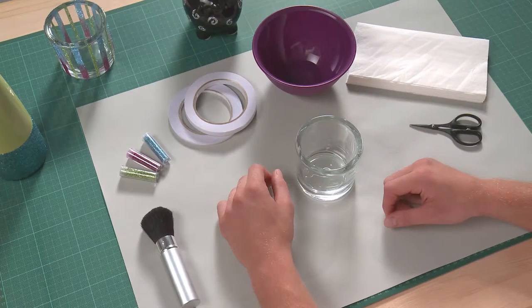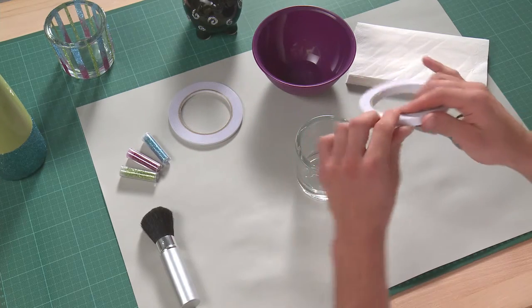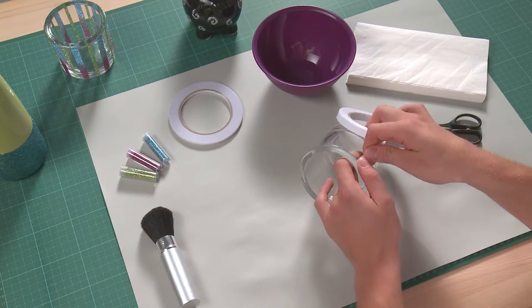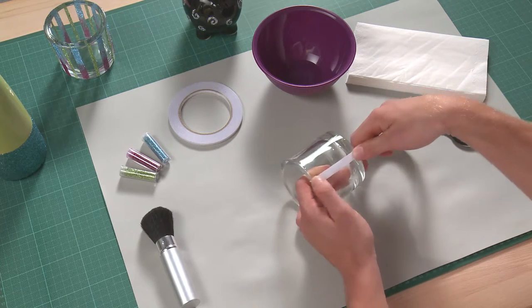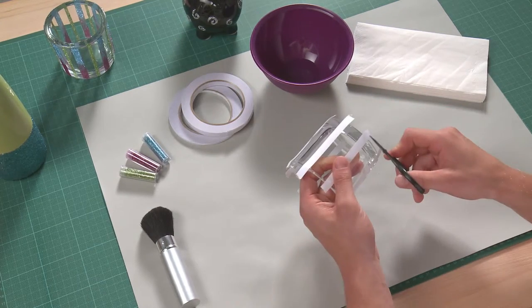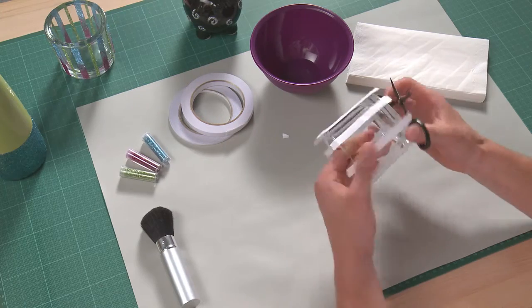For this lantern, first stick on the white adhesive strips at regular intervals and cut off the protruding adhesive tapes.